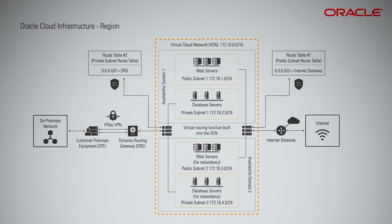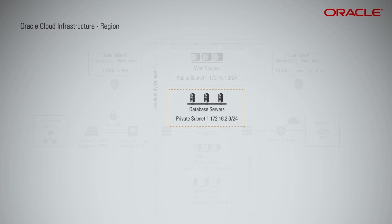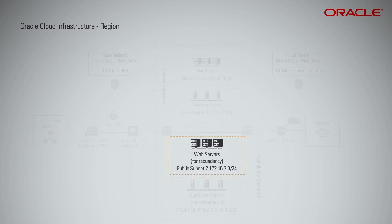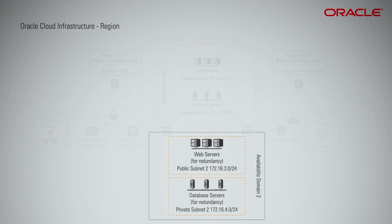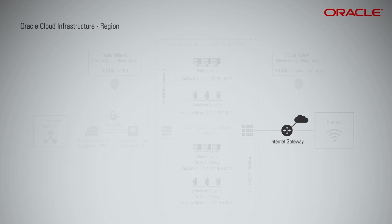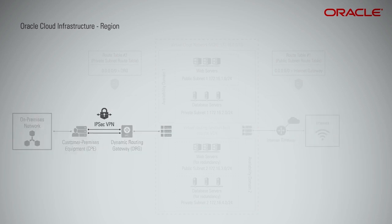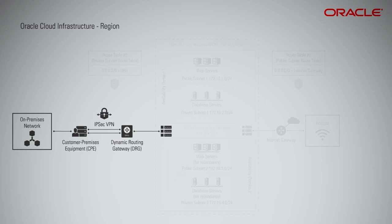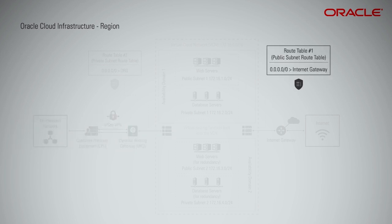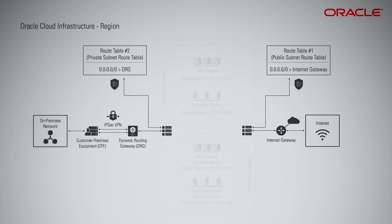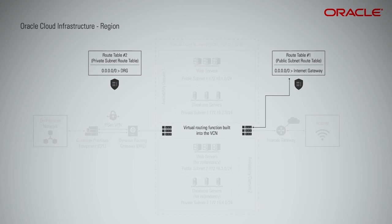In this scenario, you set up a VCN with: both a public subnet and a private subnet in a single availability domain; similar subnets in a second availability domain for redundancy; an internet gateway so the instances in the public subnets can communicate with the internet using their public IP addresses; an IPsec VPN so the instances in the private subnets can communicate securely with your on-premises network using their private IP addresses; and two route tables to direct traffic out of the VCN — one for traffic to the internet and one for traffic to your on-premises network. Also, a modified default security list where you change all the existing stateful ingress rules to allow traffic only from your on-premises network CIDR block.